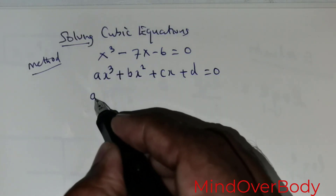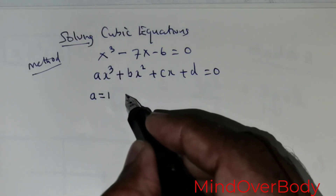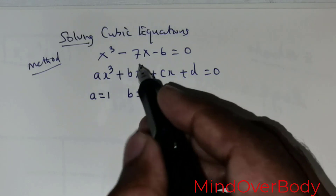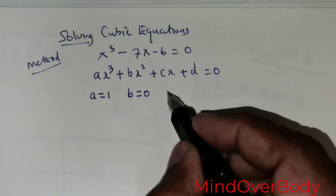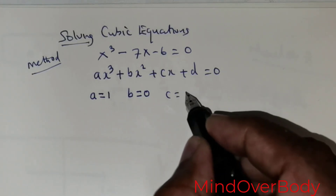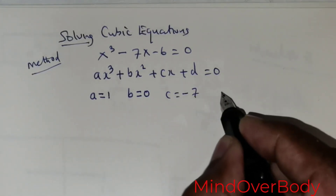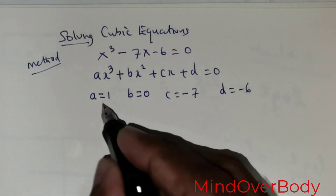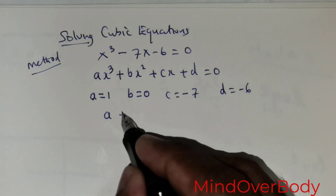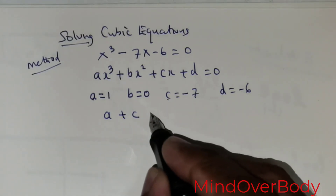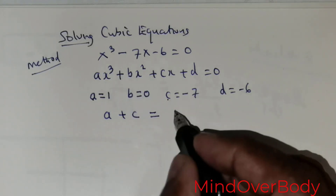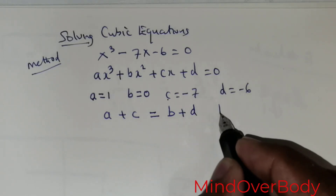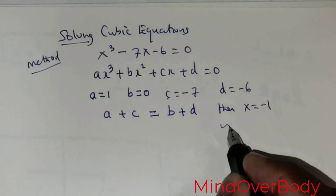The coefficient of x cubed gives the value of a. The coefficient of x squared gives the value of b — in this case b is 0. The coefficient of the x term gives c, and the constant term is d. Now if a plus c equals b plus d, then x equals negative 1 is a root.